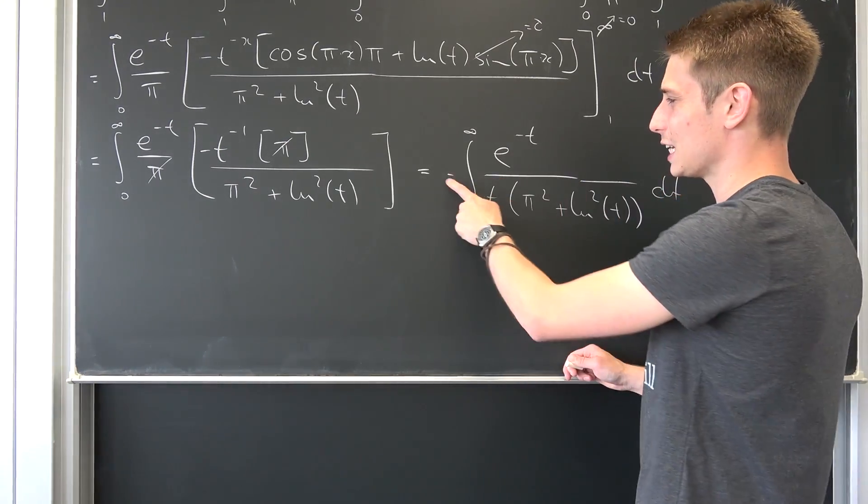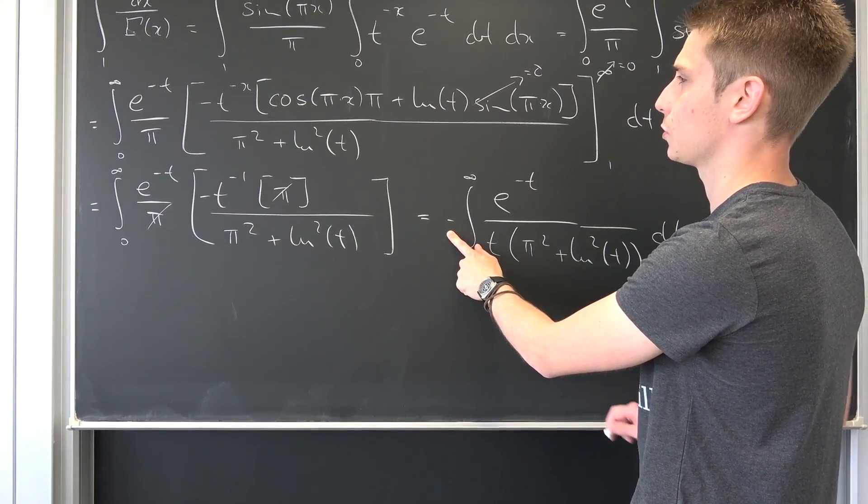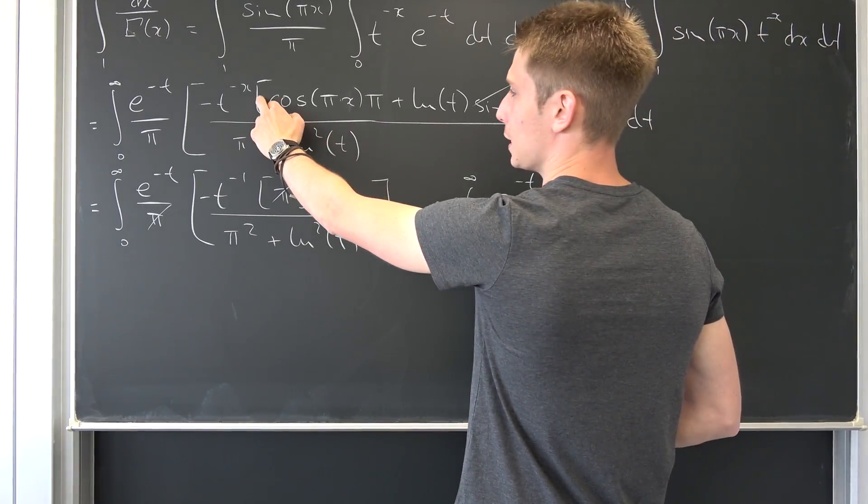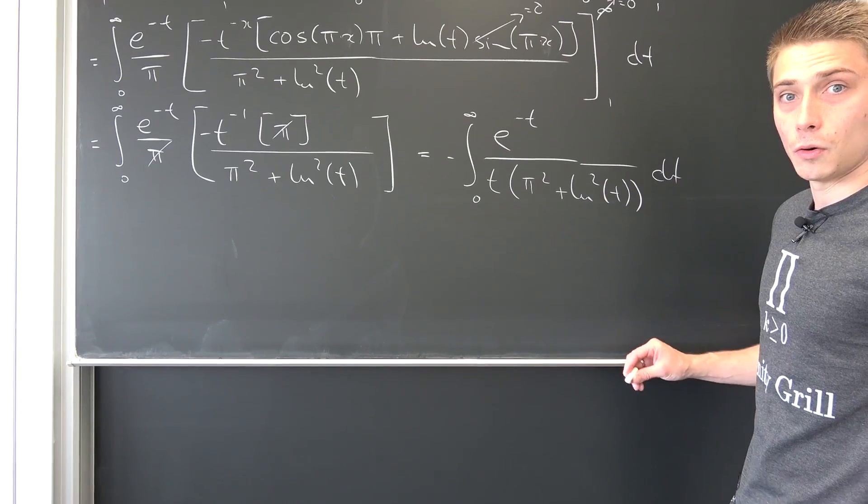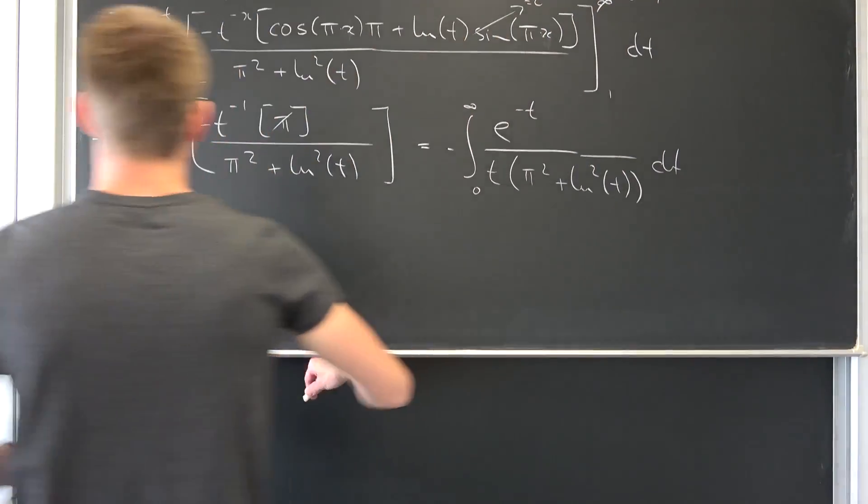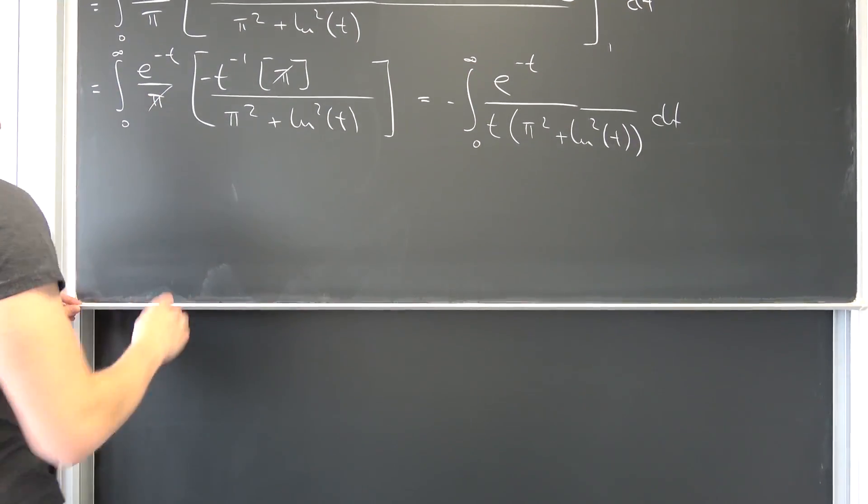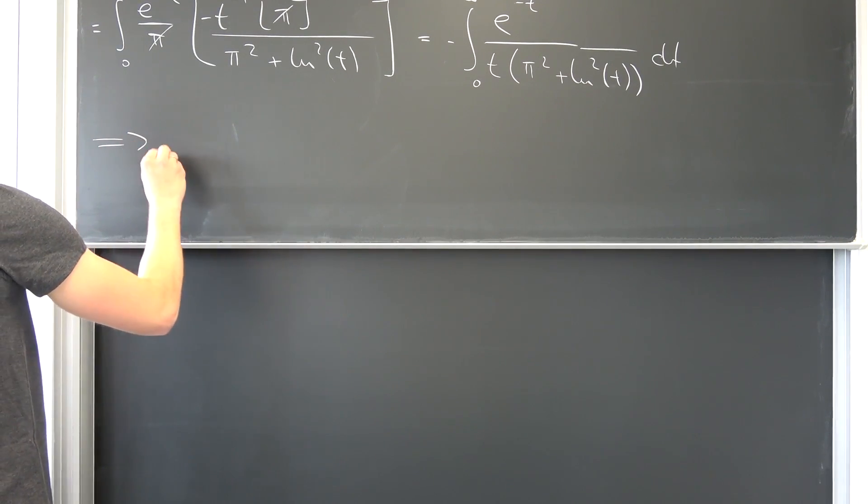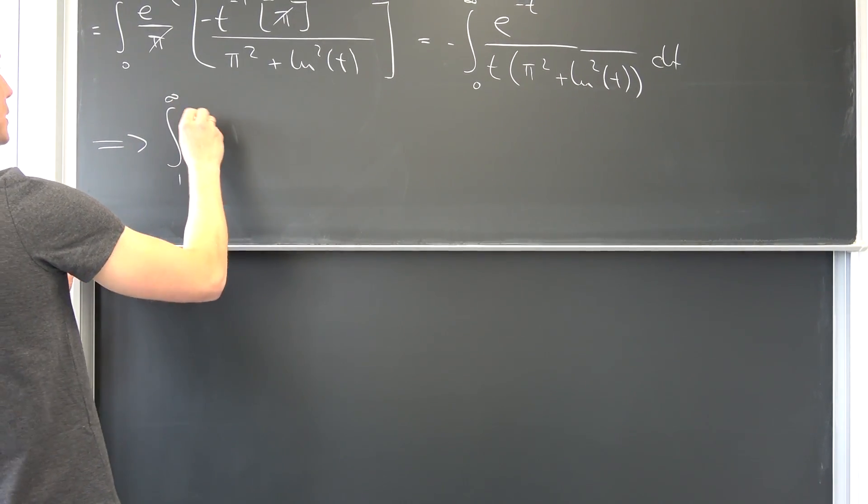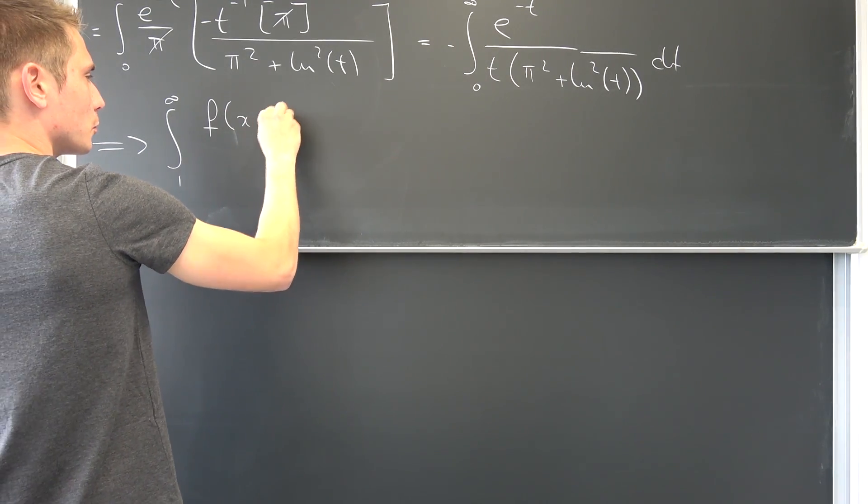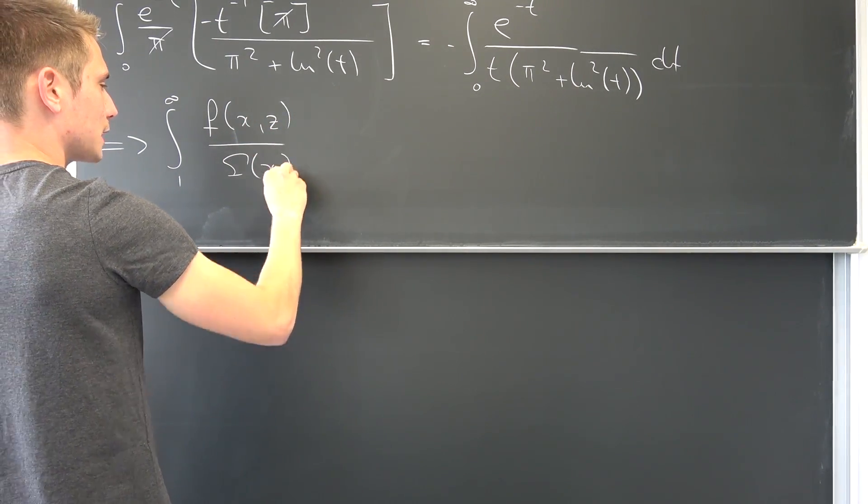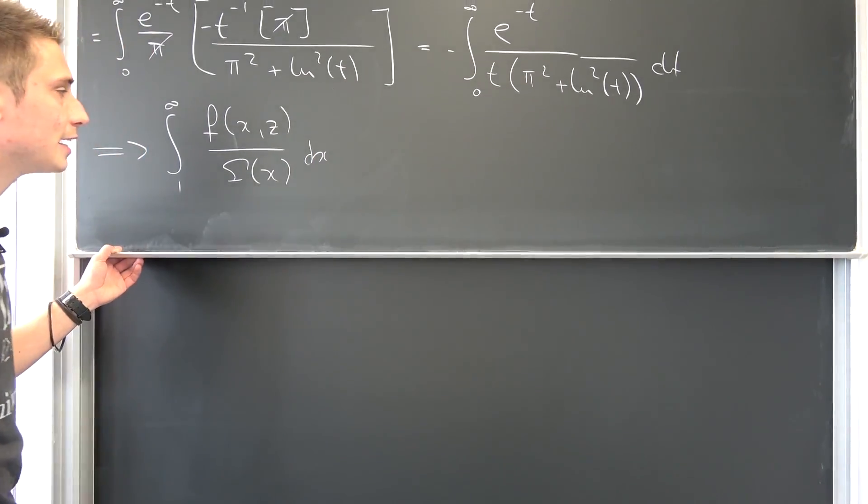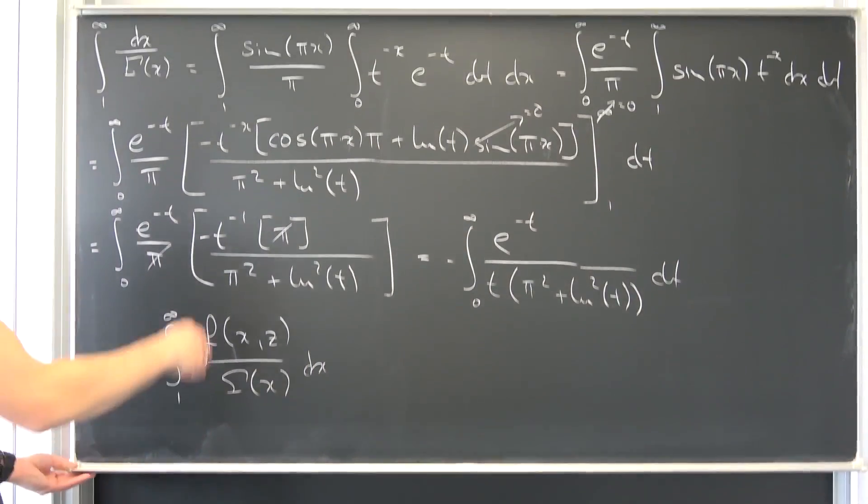And I'm fairly certain that the negative sign right here is kind of wrong, I don't know why, probably there's supposed to be a negative sign in front of the cosine. Never mind. So what I did was, basically if we parameterize our integral that we have right here, we are going to be left with some function with respect to x and z over gamma of x integrated with respect to x.